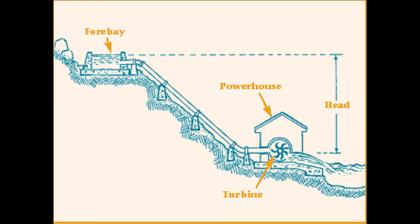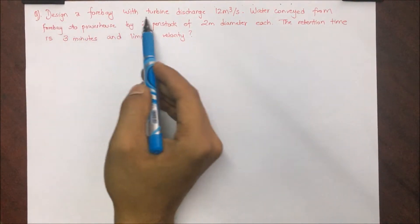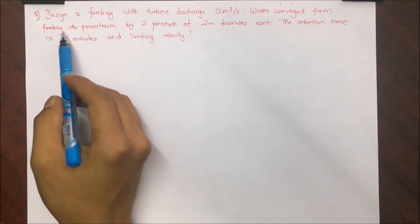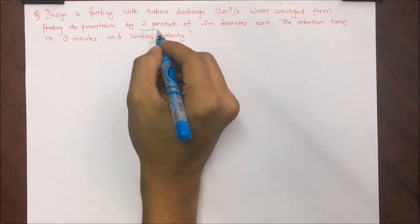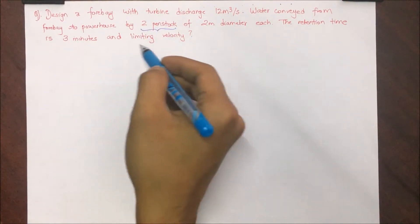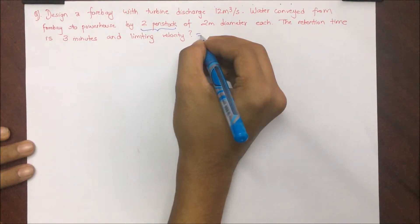For this I have a question which says design of forebay with turbine discharge 12 meter cube per second. Water conveyed from the forebay to powerhouse by two penstocks of two meter diameter each. The retention or detention time is three minutes and the limiting velocity is 0.2 meter per second for forebay.